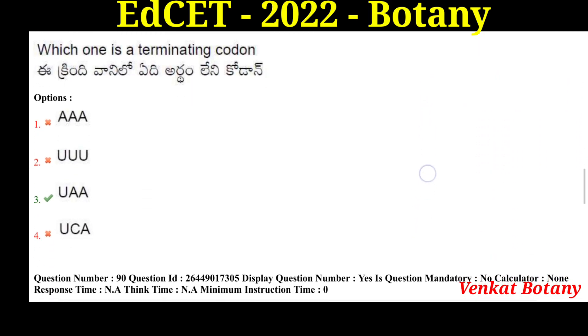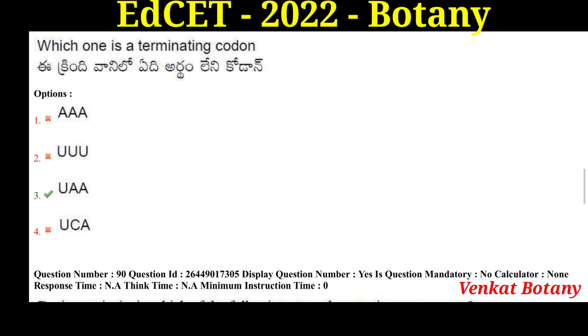Which one is a terminating codon? The terminating codons are UAA, UAG, and UGA.